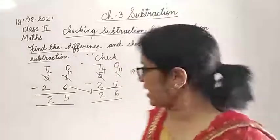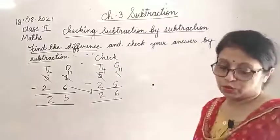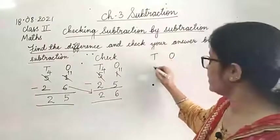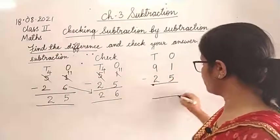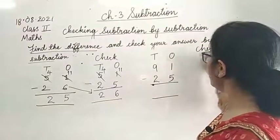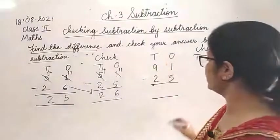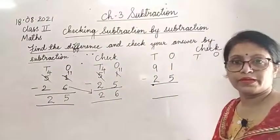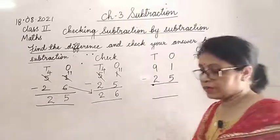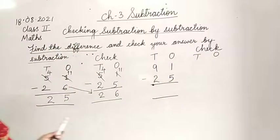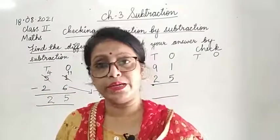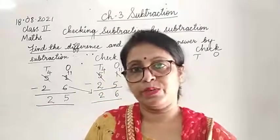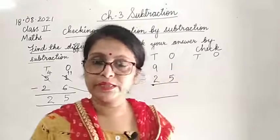I hope this is clear to you. There is one last question remaining: 91 minus 25. You have to subtract this and then check it as well. This is your homework. All other questions I have explained. If there is any doubt, you can clear it with me. With this we come to the end of the video. If the topic is not clear, do tell me during online class and I will explain it once again. We will meet again in the next video. Thank you.